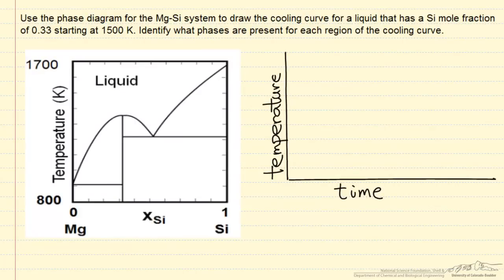Let's look at one more example of a cooling curve for the same diagram, and we're going to start with a different composition. We're going to start with an overall silicon mole fraction of 0.33 at 1500 Kelvin. So that means we're starting here.